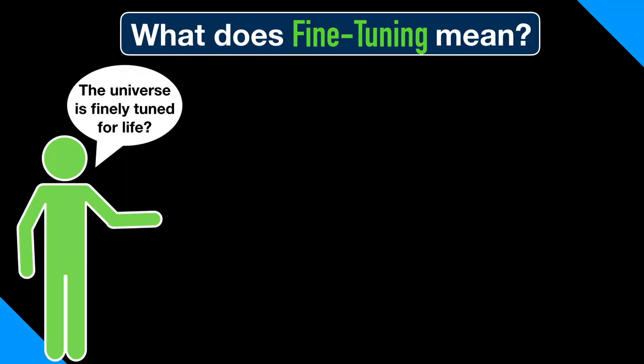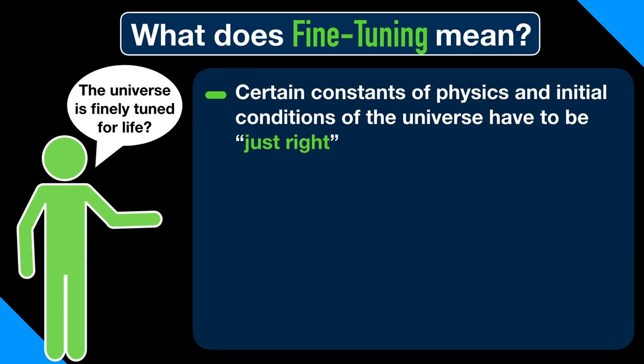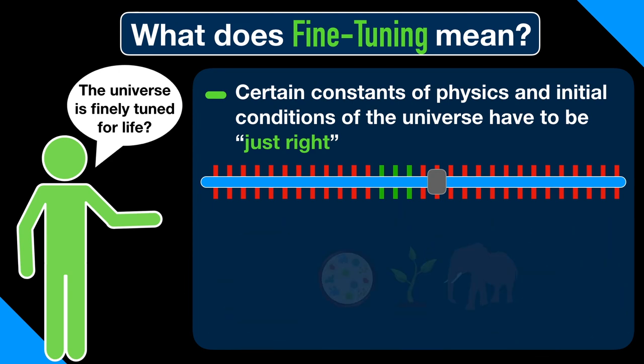Before offering a fine-tuning argument, we first need to define what fine-tuning means. To say that the universe is finely tuned for life is to say that certain constants of physics and initial conditions of the universe have to be just right, in the sense that they fall within a very narrow range. And if they were ever so slightly different, then the evolution of life would not have been possible.